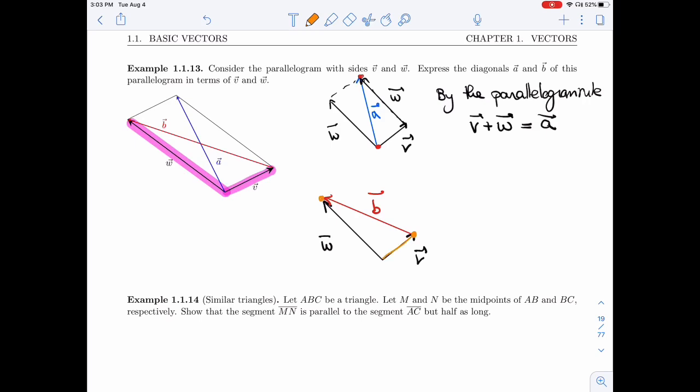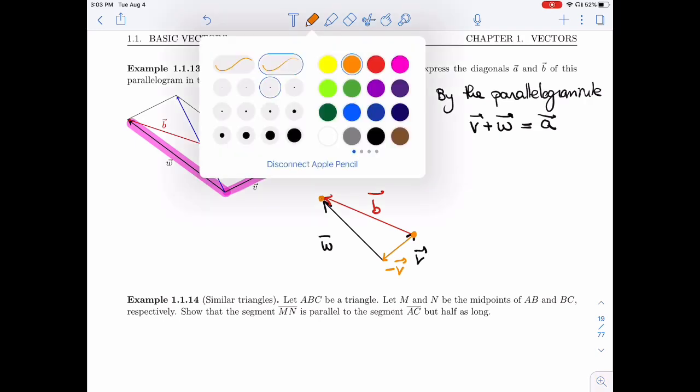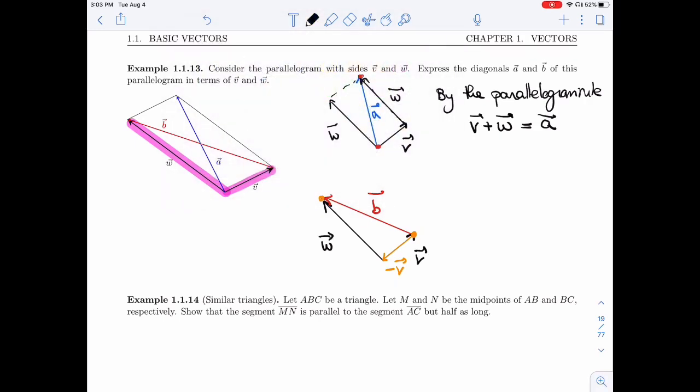I'm going to start by going along V but in the opposite direction. So here I'm going to take minus V and then I'm going to keep going along W. So W I'm traversing in the right direction, in the direction of the arrows, but I'm using minus V. So once I have, let me even erase V. We have it in the original picture. Now I have minus V and W.